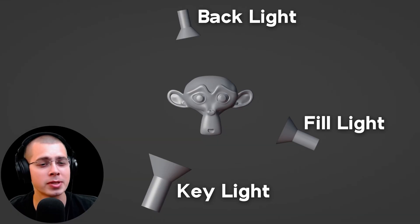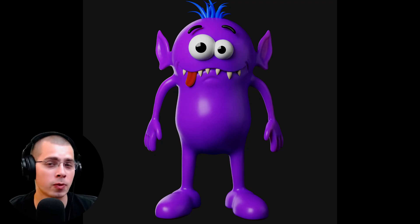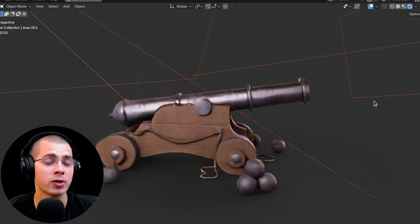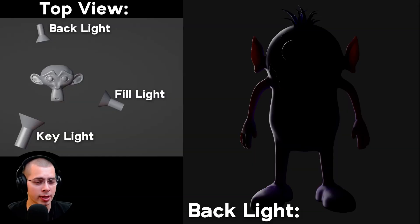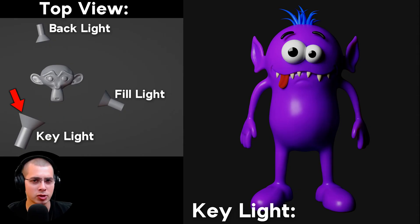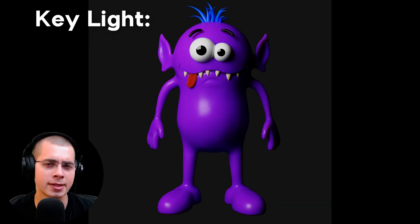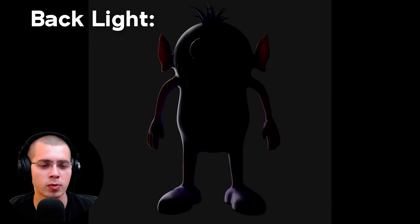Tip number four is to use a basic three-point lighting system as a guide when you're first setting up your lighting, which is especially useful when rendering props or characters. With a three-point lighting system, you have a backlight which acts as a rim light to separate the object from the background, a key light or main light that lights up the object — I usually like that somewhere on the side but still generally toward the front — and then a fill light to fill in dark shadows so they aren't too dark. I usually like using area lights when setting up a three-point lighting system.